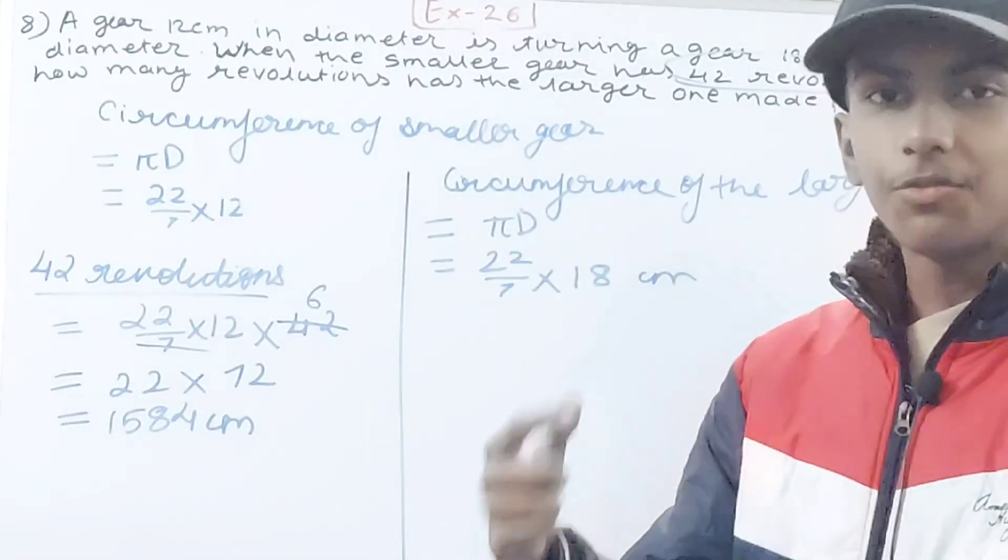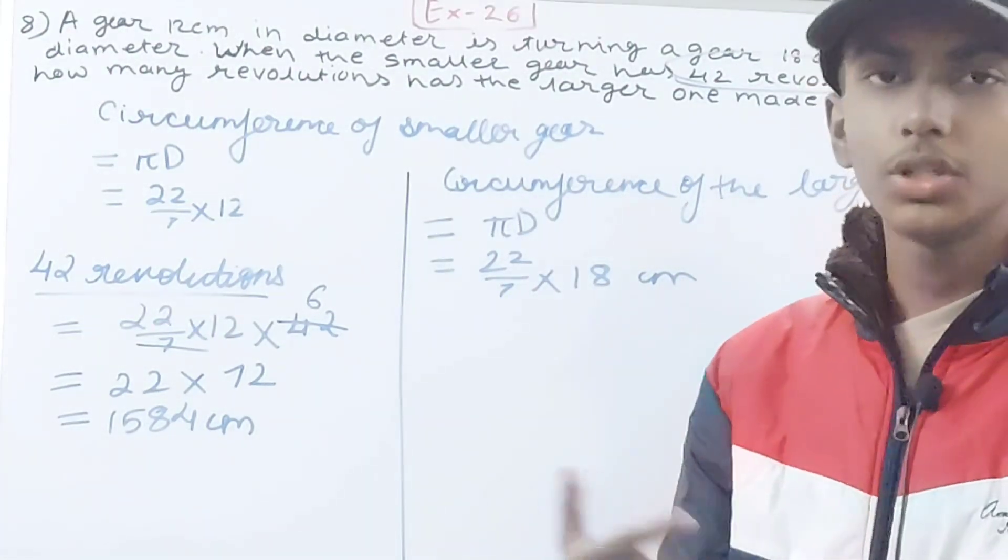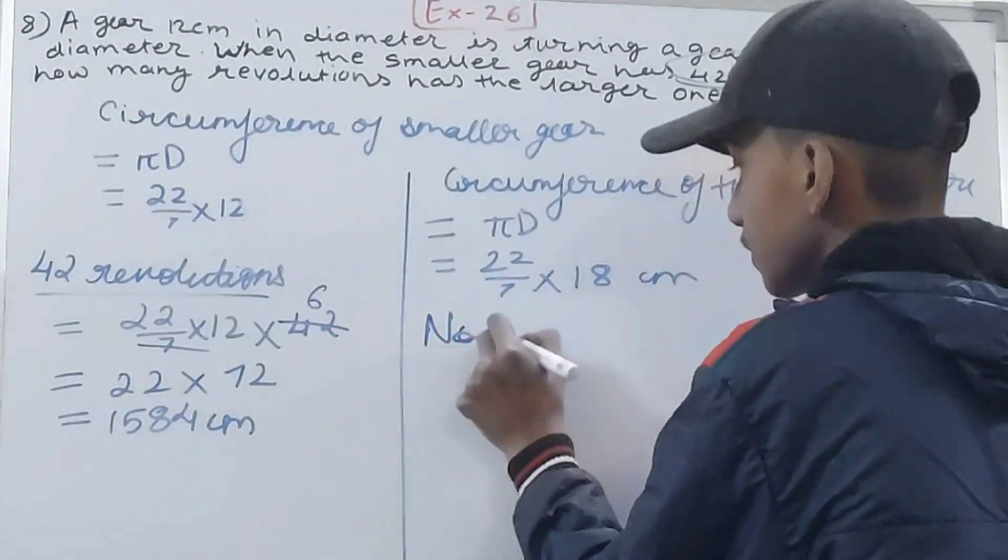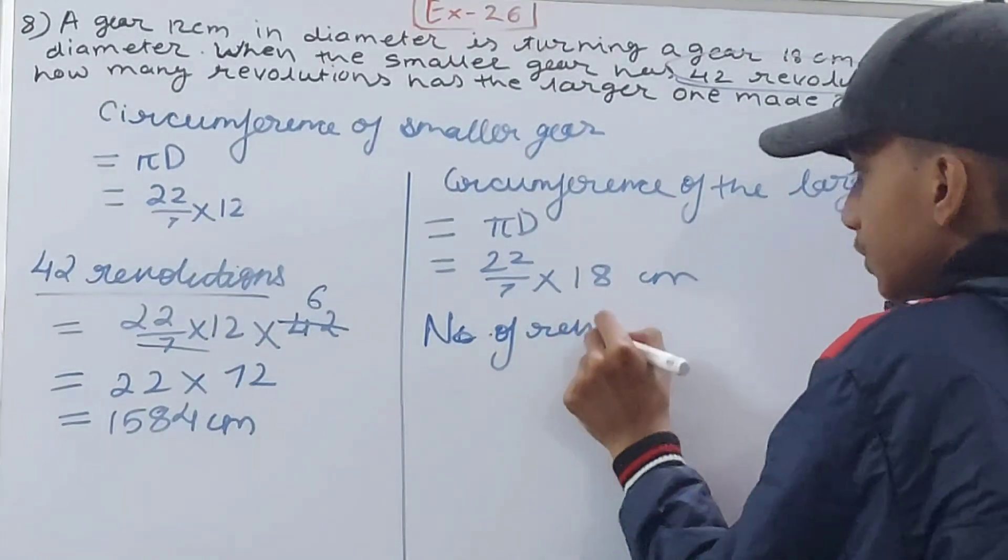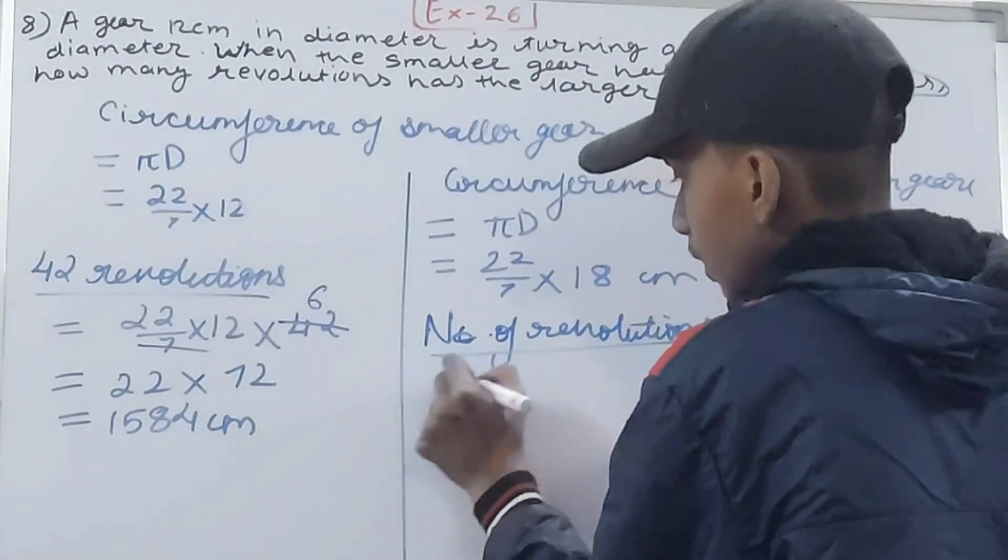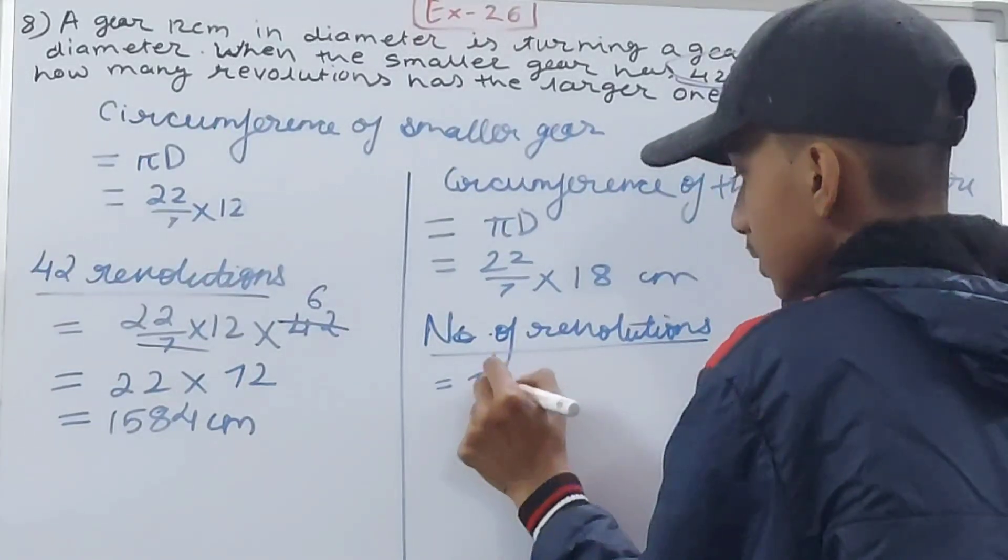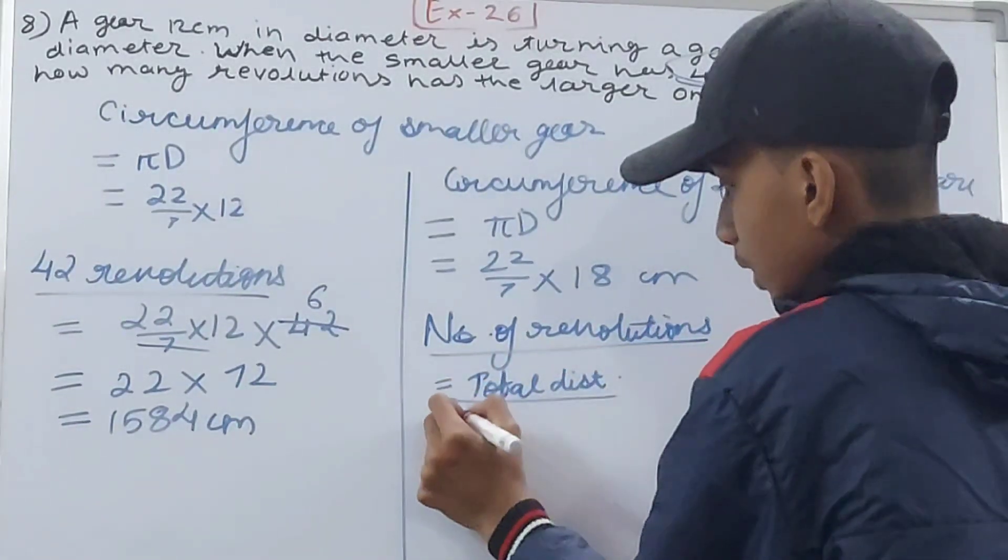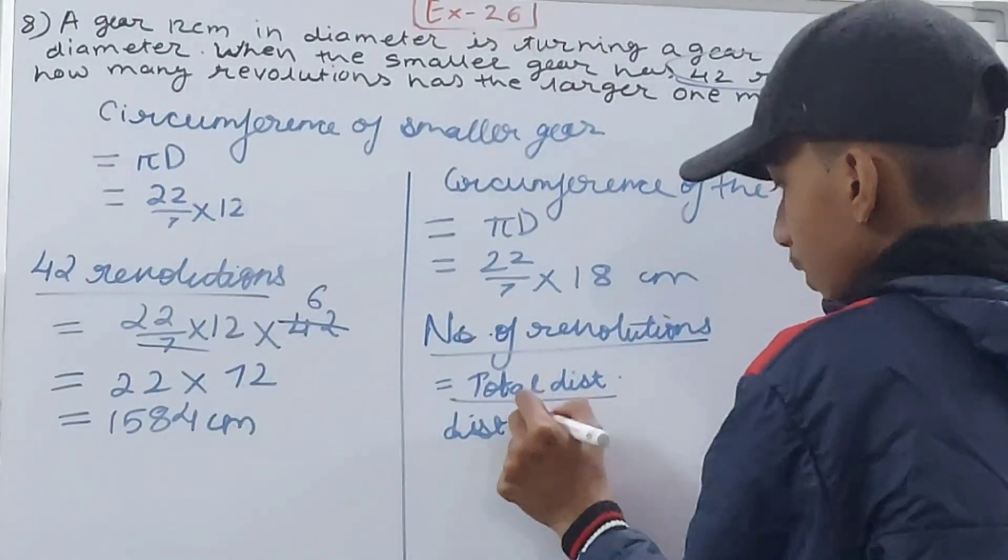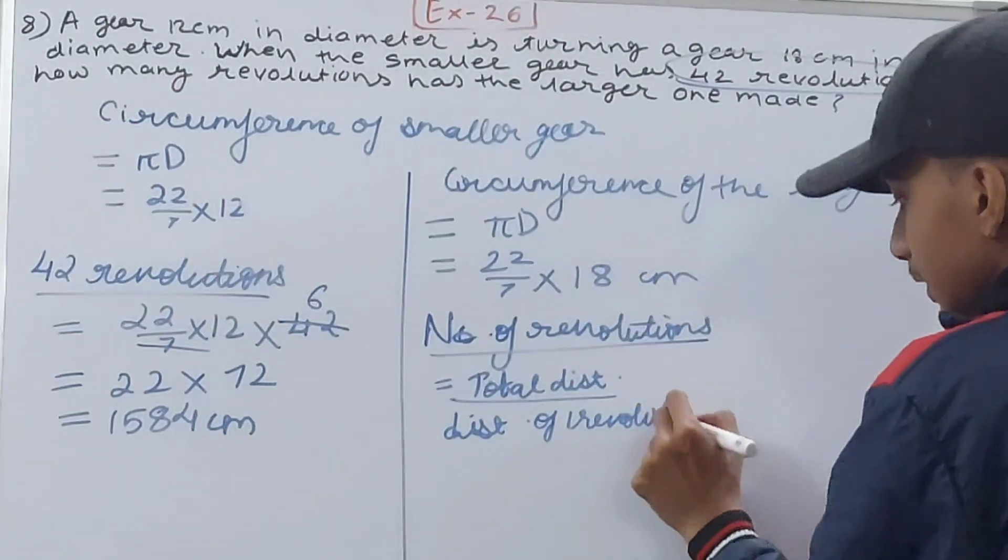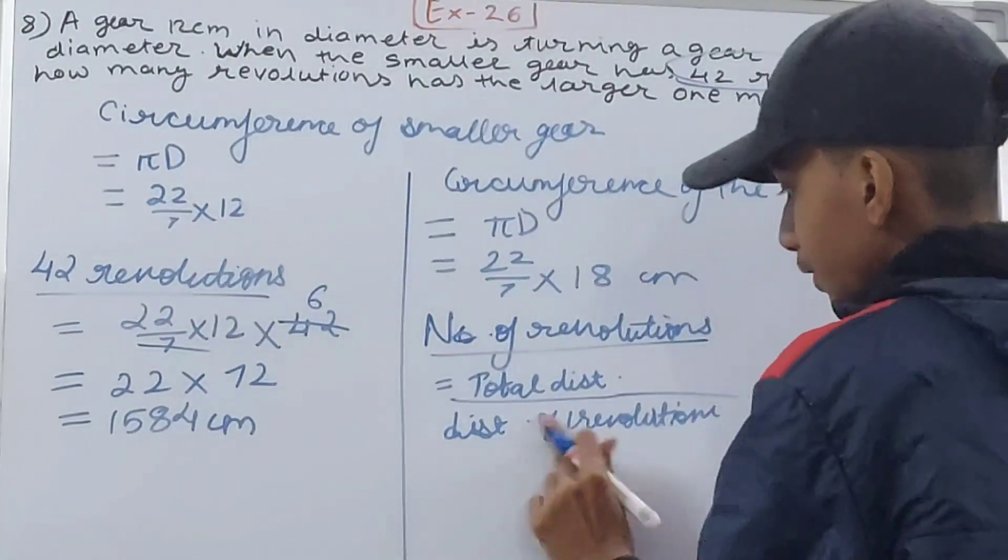We have to find how many revolutions it will take to cover this distance. So number of revolutions is equal to total distance upon distance in one revolution.